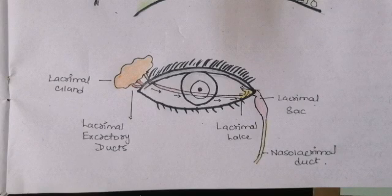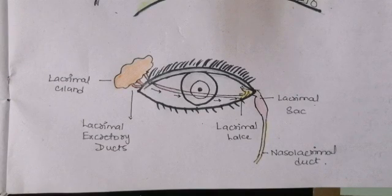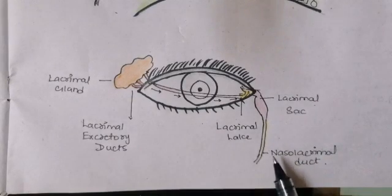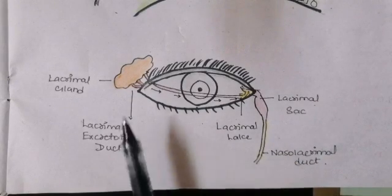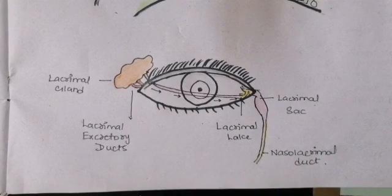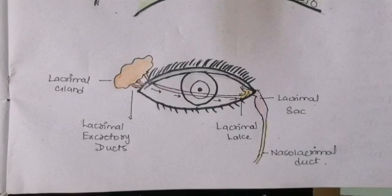Welcome to my channel Lenovoet. In this video we will discuss the lacrimal apparatus — the pathway of the tears from the lacrimal gland to the nasolacrimal duct, and also the innervation of the lacrimal apparatus.